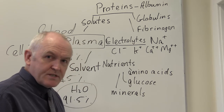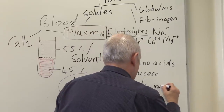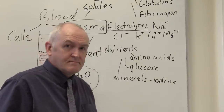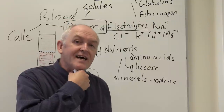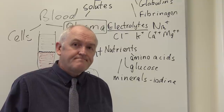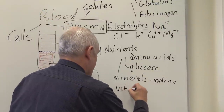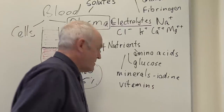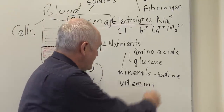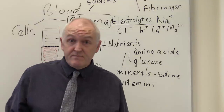Other nutrients are going to be minerals. Minerals are important inorganic simple compounds — you might think of iodine, for example. The thyroid gland needs iodine in order to make thyroid hormone. Other soluble nutrients in the blood are vitamins. The vitamins A, D, E, and K are the fat-soluble vitamins. In the plasma we find water-soluble vitamins — vitamins B1 to B11 and vitamin C.